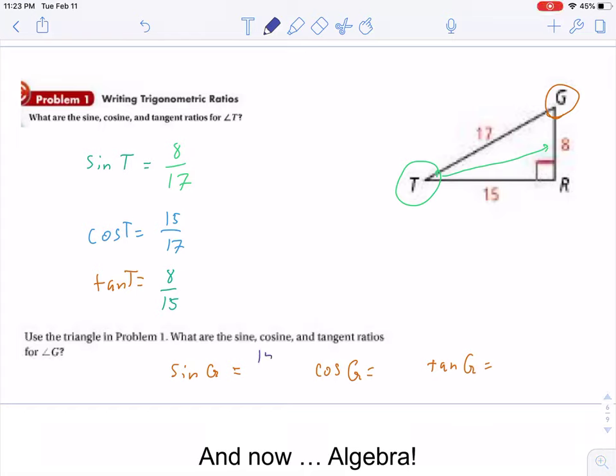Did you get 15 over 17? I hope you did. How about these other ones? Well, they end up being very similar to the trigonometric ratios of T, as you might expect for two angles that are sharing the same triangle.